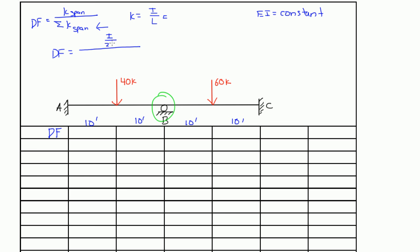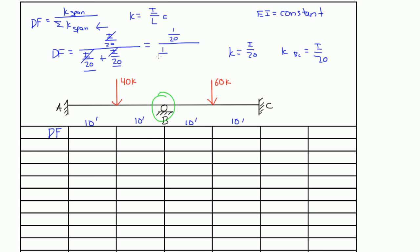In our case, EI is constant. So for the left side of joint B, the distribution factor is the k value of span AB, which is i over 20, divided by the sum: i over 20 plus i over 20. Since EI is constant, we can factor out i, and we're really looking at 1 over 20 divided by 1 over 20 plus 1 over 20. If we plug this into our calculator, the distribution factor is 0.5. So I'm going to write 0.5 for the distribution factor on the left side of joint B.